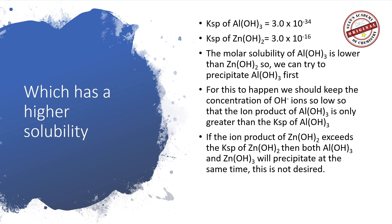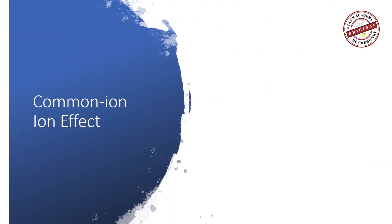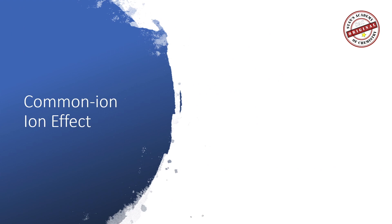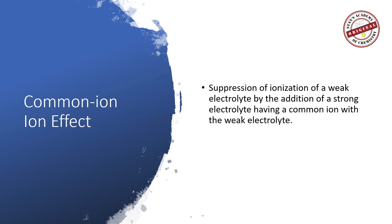This can be achieved by what we call the common ion effect — the suppression of ionization of a weak electrolyte by the addition of a strong electrolyte having a common ion with the weak electrolyte. This statement expresses Le Chatelier's principle, and it helps us predict the direction of a reaction, how to change concentrations, and how to control precipitation.